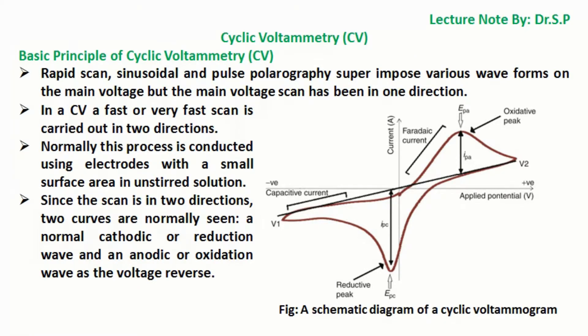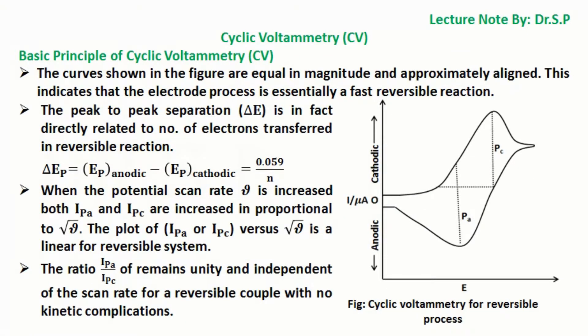From this cyclic voltammogram we can get a lot of information regarding cyclic voltammetry CV. The curves shown in the figure are equal in magnitude and approximately aligned. This indicates that the electrode process is essentially a fast reversible reaction.